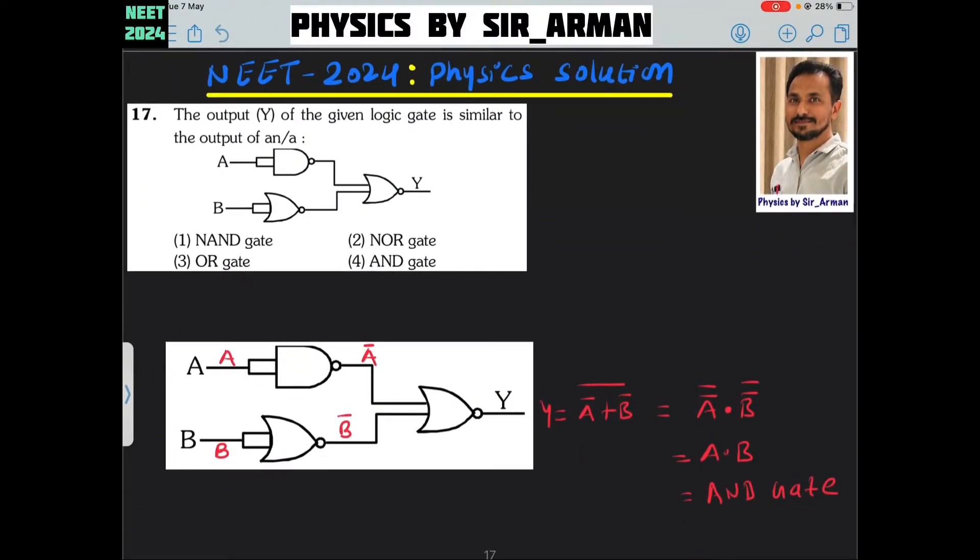Question number 17. The output Y of the given logic gate is similar to the output of A. Here some mixed gates are given, and from this mixed gate we have to identify which type of gate this behaves as.